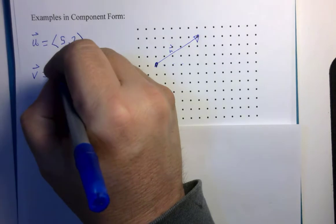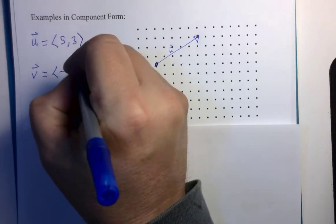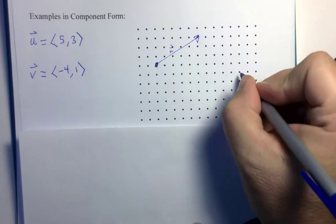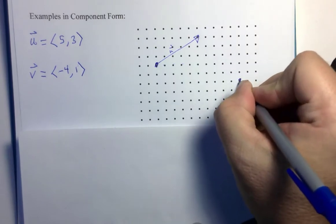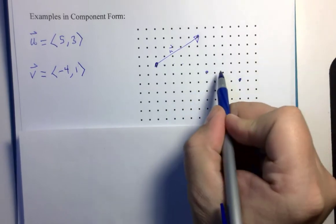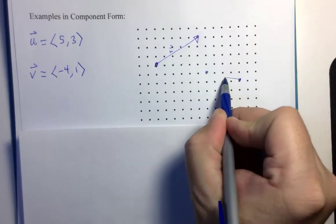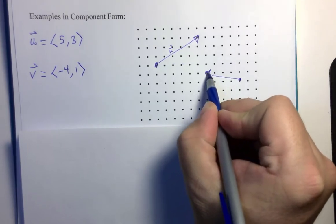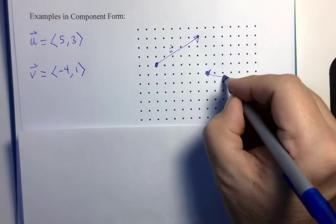Vector V, let's say vector V is negative 4 comma 1. That means if I were to start here, for instance, I would go left 1, 2, 3, 4 and upwards 1 unit. So the directed line segment would be going that way. That would be vector V.